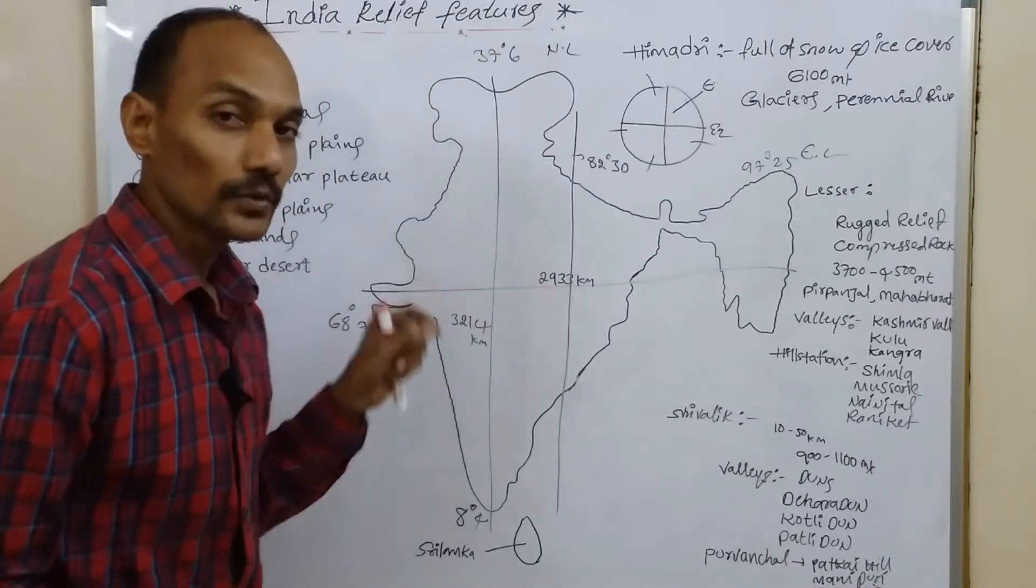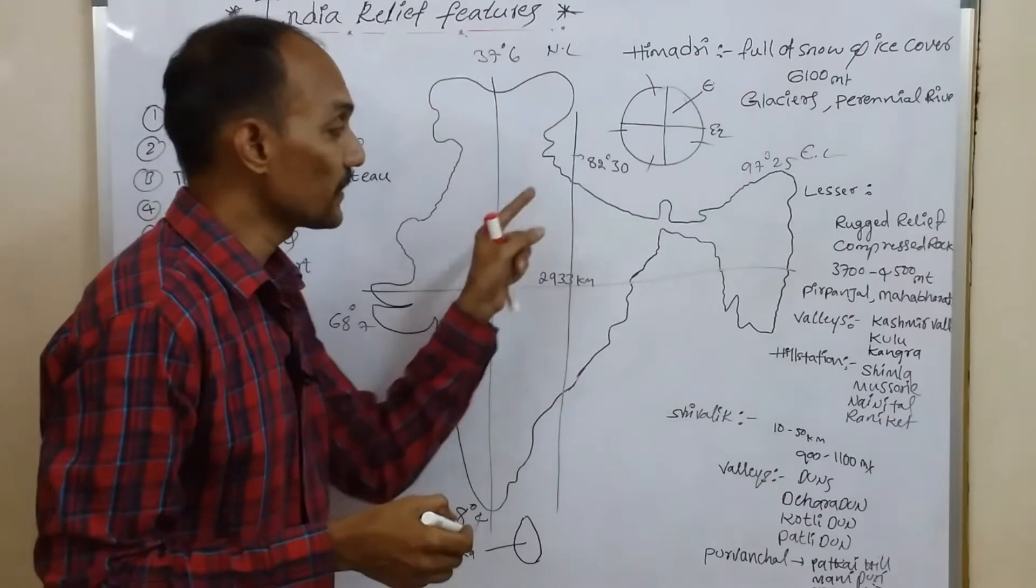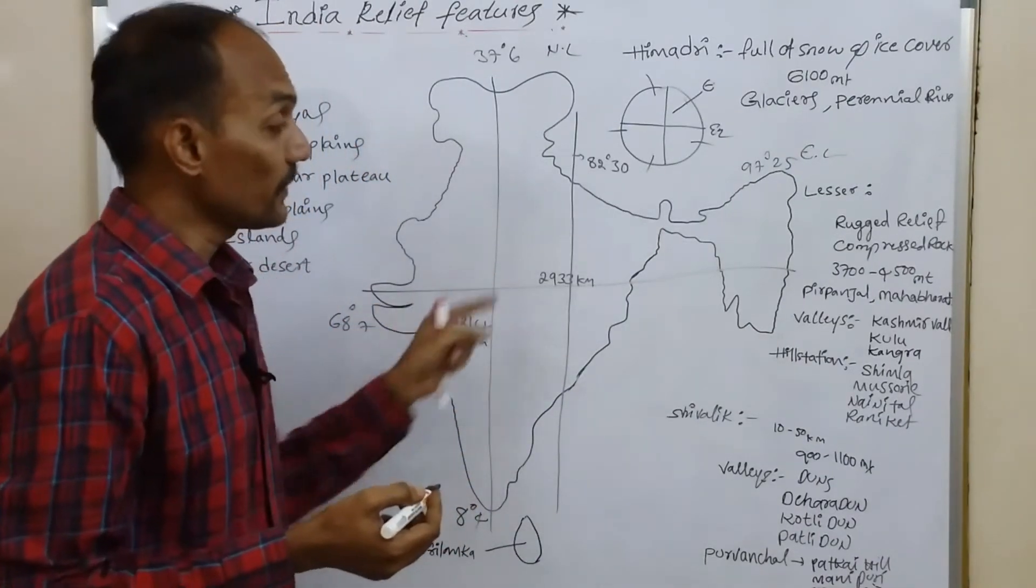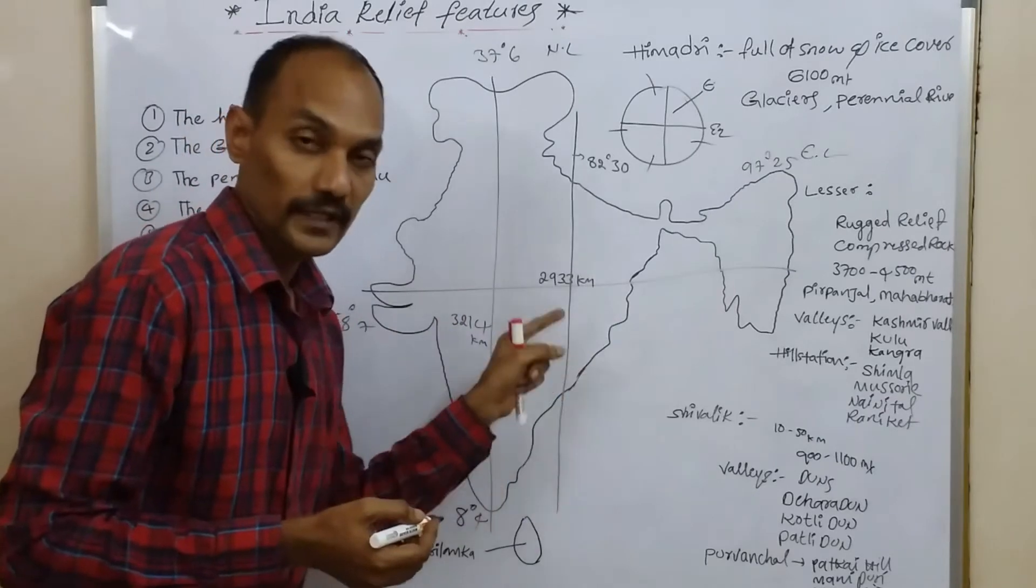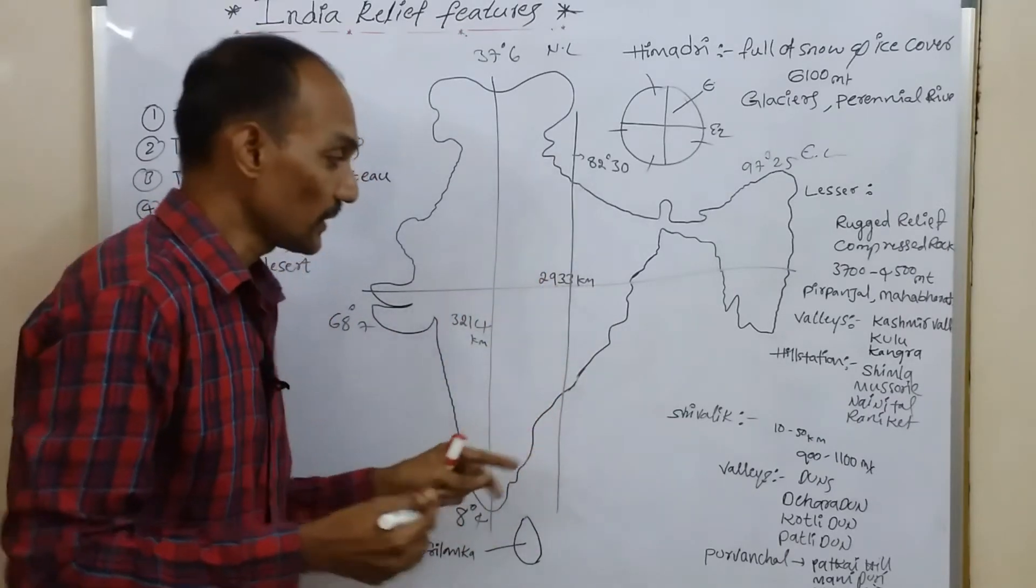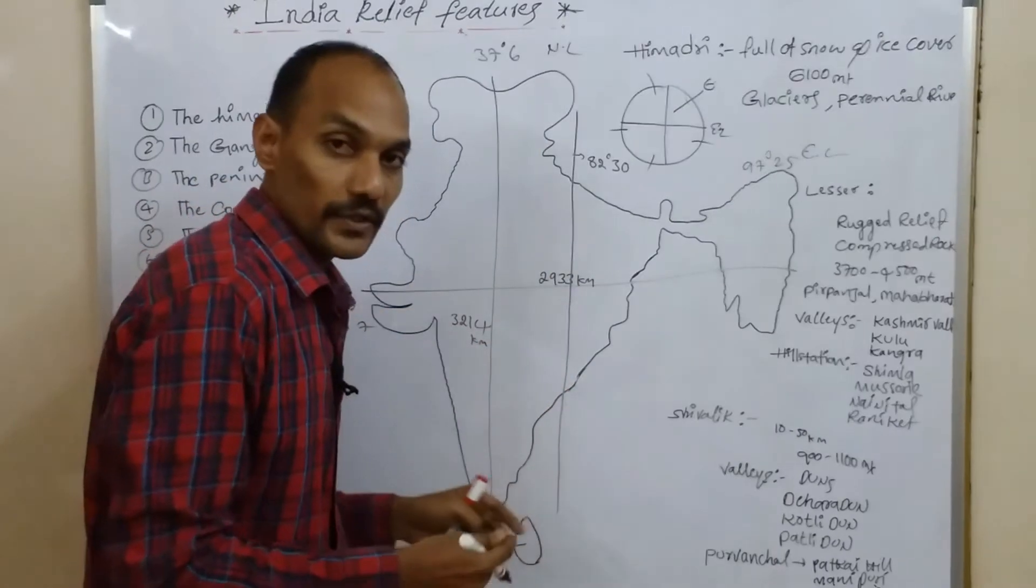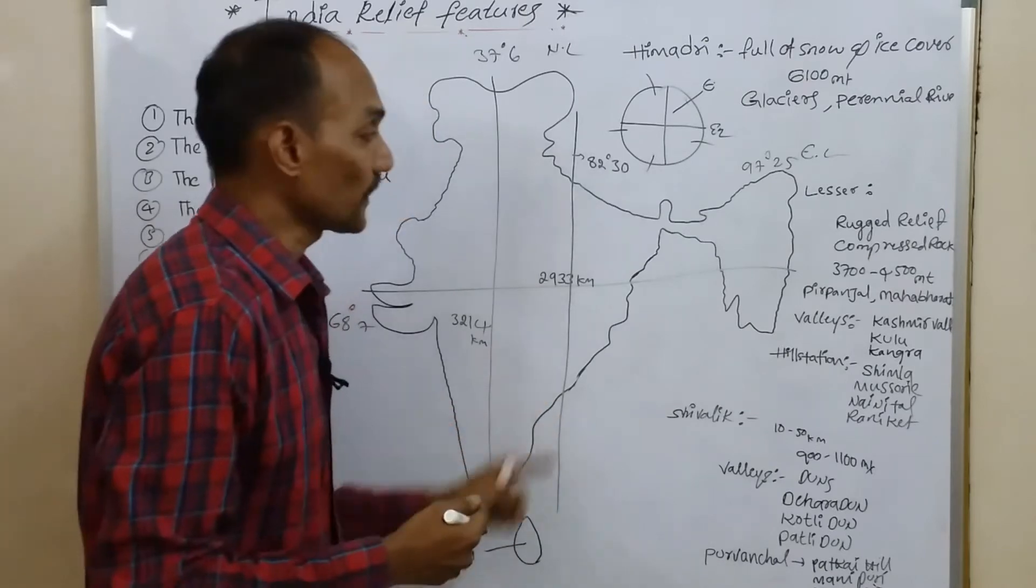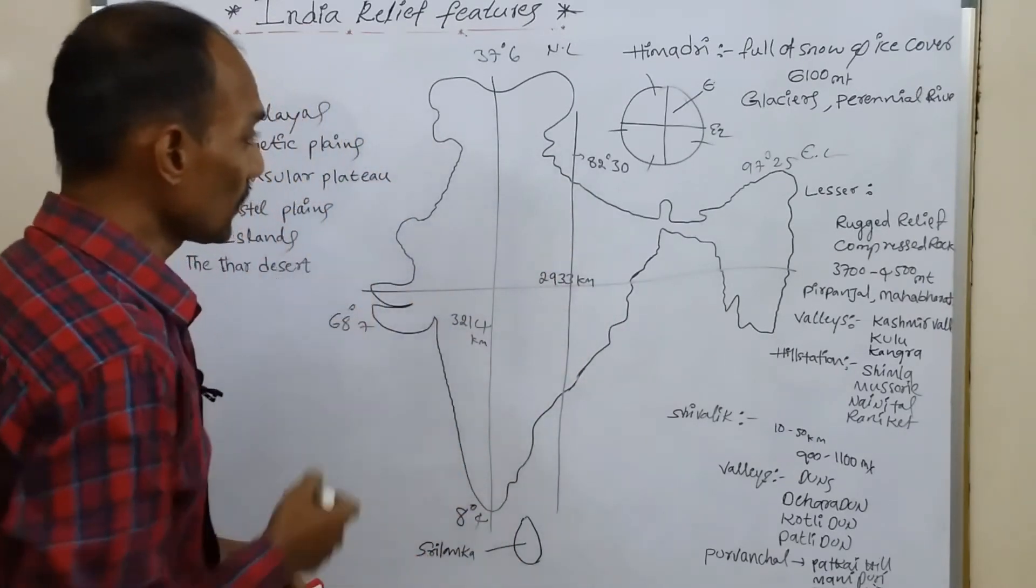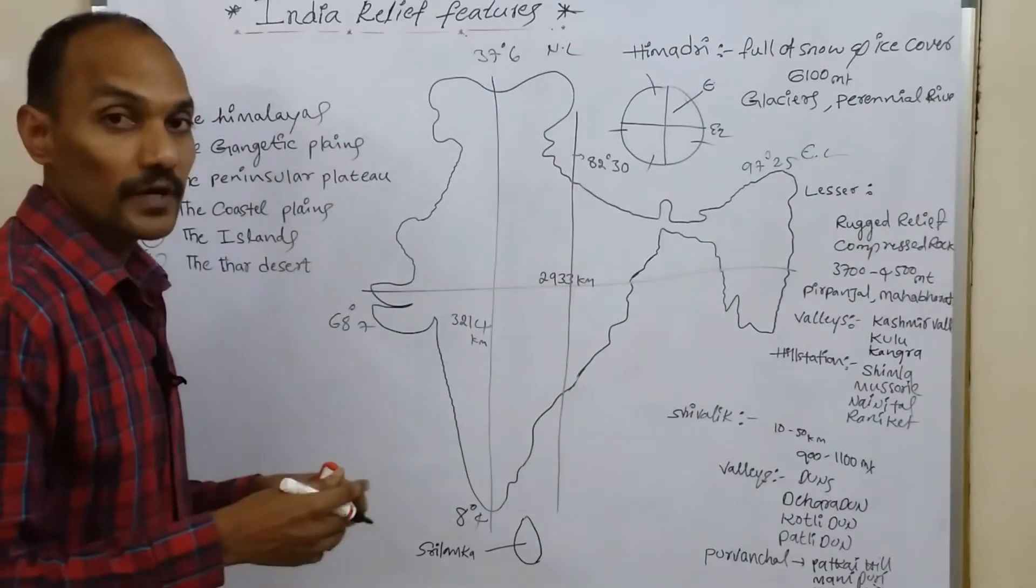Here you might have a doubt why we choose specifically 82 and a half eastern longitude when we have so many longitudes. This line, 82 and a half eastern longitude, specially divides India into two equal parts. That's why we choose it as the Indian Standard Meridian.